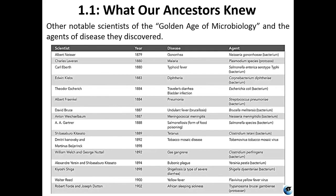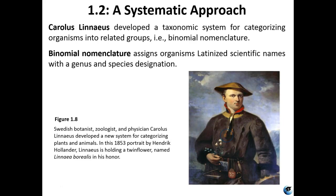This table has a long list of other scientists, researchers, and doctors who were a big deal in the golden age of microbiology — late 1800s and early 1900s. When you have a lot of names and dates, putting them in a table is how I recommend studying. Notable ones include Charles Laveran for malaria, Carl Eberth for typhoid, Albert Fraenkel who discovered the causative agent of pneumonia — Streptococcus pneumoniae — in 1884, and tetanus.